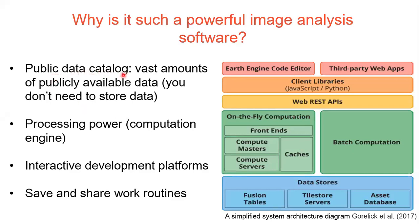It has a public data catalog — a vast amount of publicly available data. You don't need to store any data or download any dataset to your computer. You just call the dataset like Landsat or Sentinel, and apply your algorithm over the dataset in your web browser only. It has a massive processing and computation engine. It is available on two platforms: JavaScript and Python. You can also save and share work routines — in traditional GIS software, you need extra licenses to share your work.